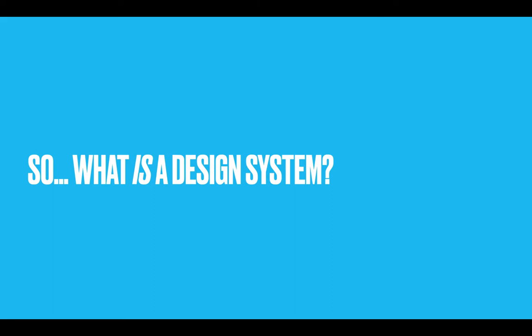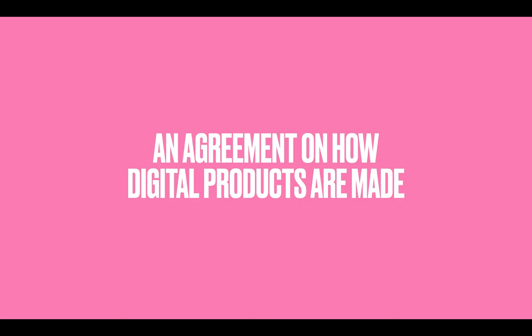So what is a design system? At the root, it's an agreement on how digital products are made. That's all. It's an agreement within your team or your department or your company on what your products are, what they look like and how they work.